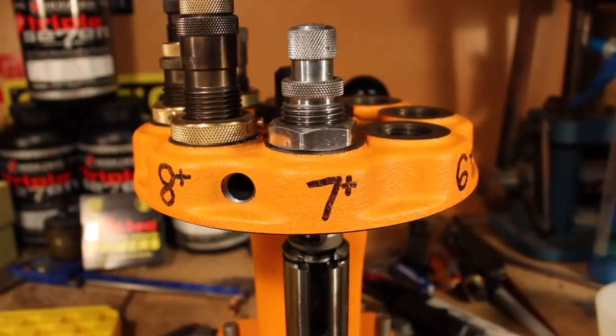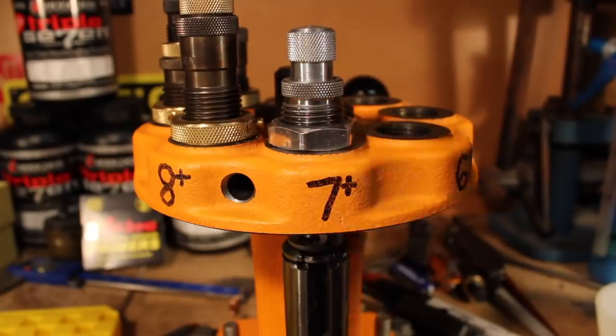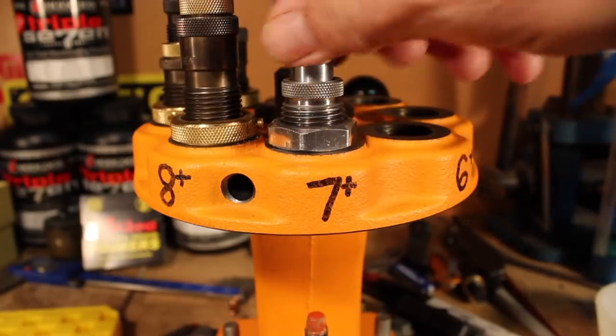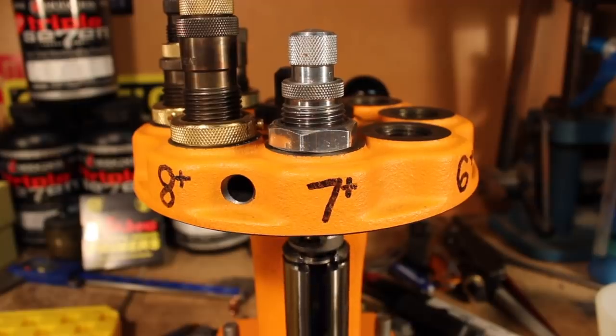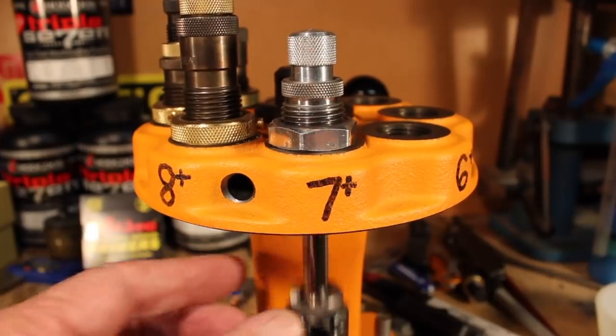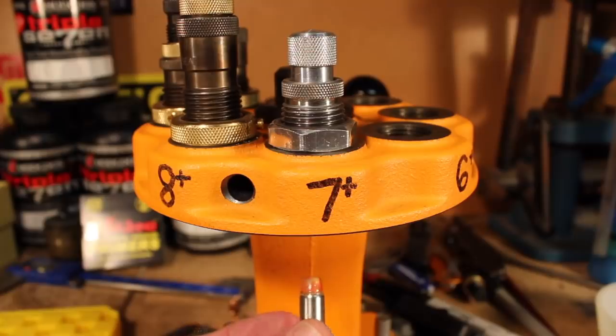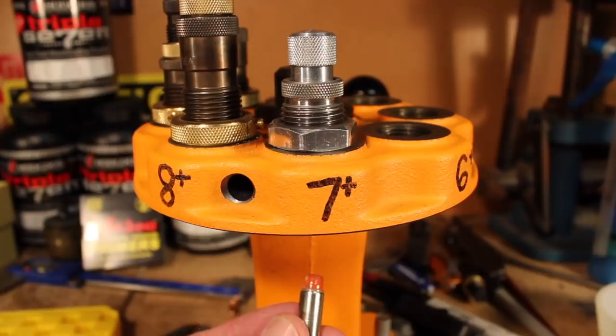So here we go. We adjust it by cranking this down until we get the crimp we want. We go ahead and give it a half turn and maybe another quarter turn. There we go, getting the crimp. And then we see how much crimp we got. That looks pretty good. We just go ahead and crimp all of them.